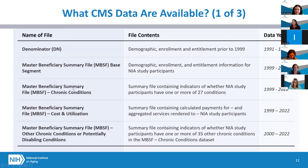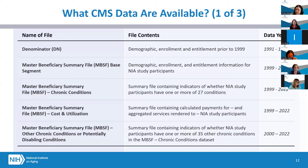The other MBSF files include the chronic conditions file, which contains indicators of whether participants have one or more of 27 chronic conditions, available from 1999 to 2022 — with three conditions added in 2020, bringing the total to 30. The cost and utilization file, available from 1999 to 2022, contains calculated payments and aggregated services rendered to participants. The other chronic conditions or potentially disabling conditions file contains 35 additional chronic conditions including mental health, tobacco, alcohol and drug use, developmental disorders, disability-related conditions, behavioral health, and other chronic physical conditions.